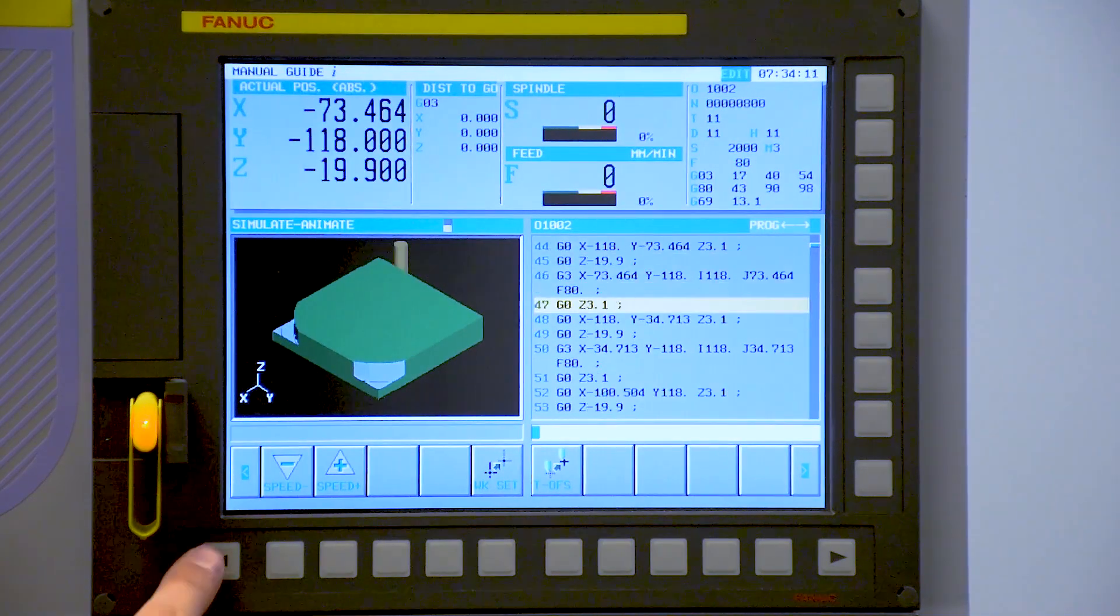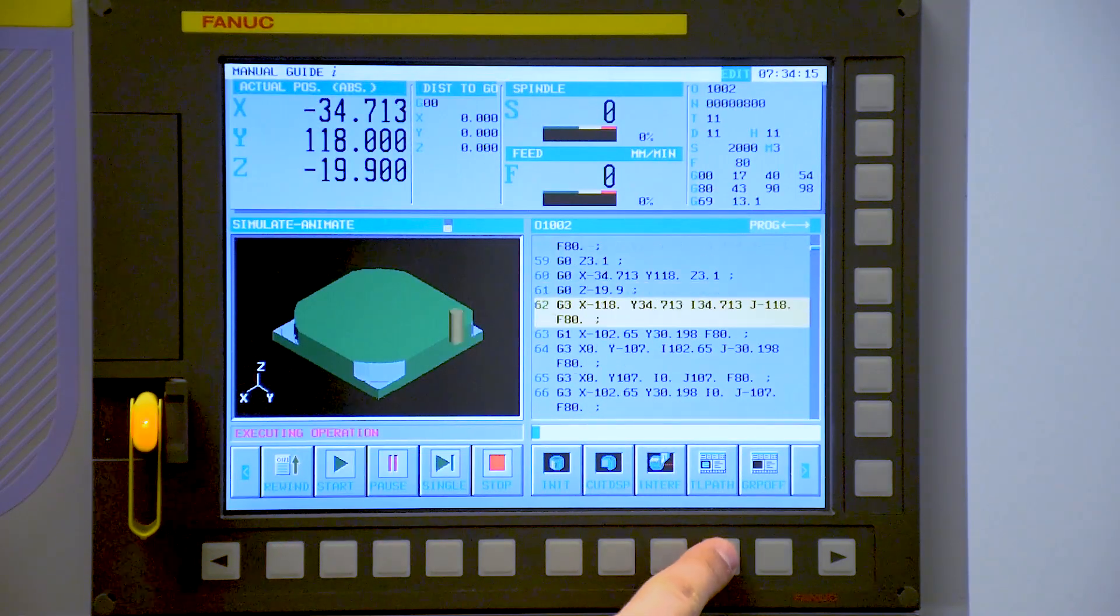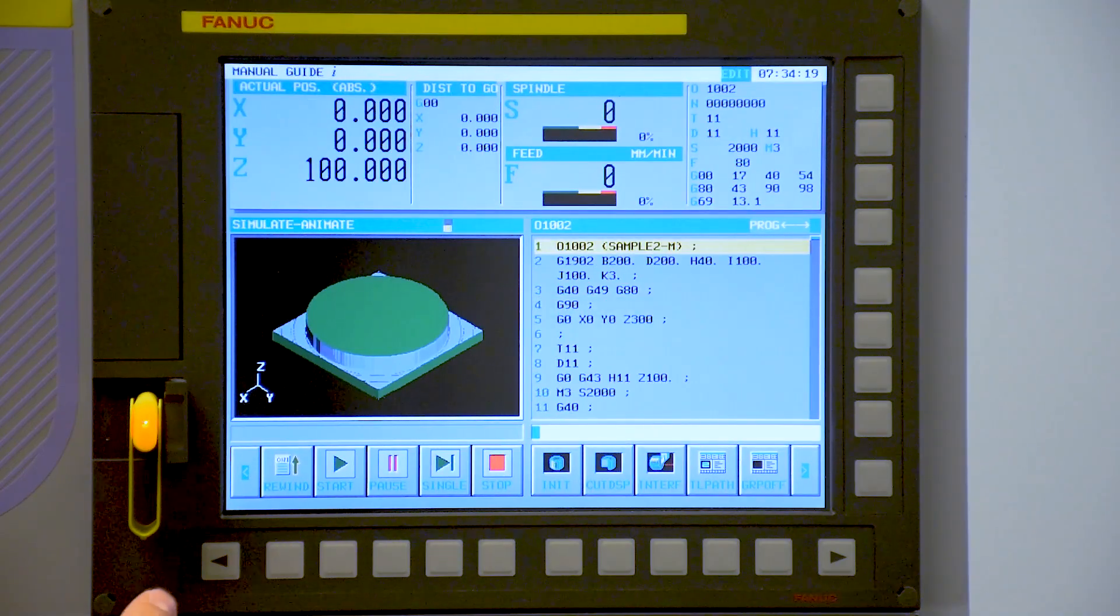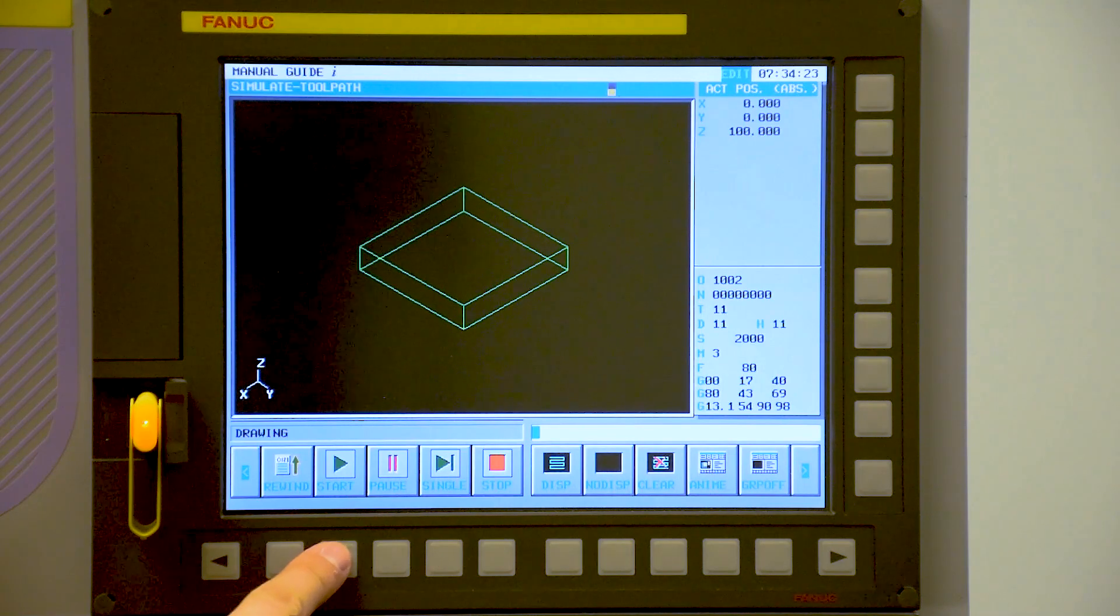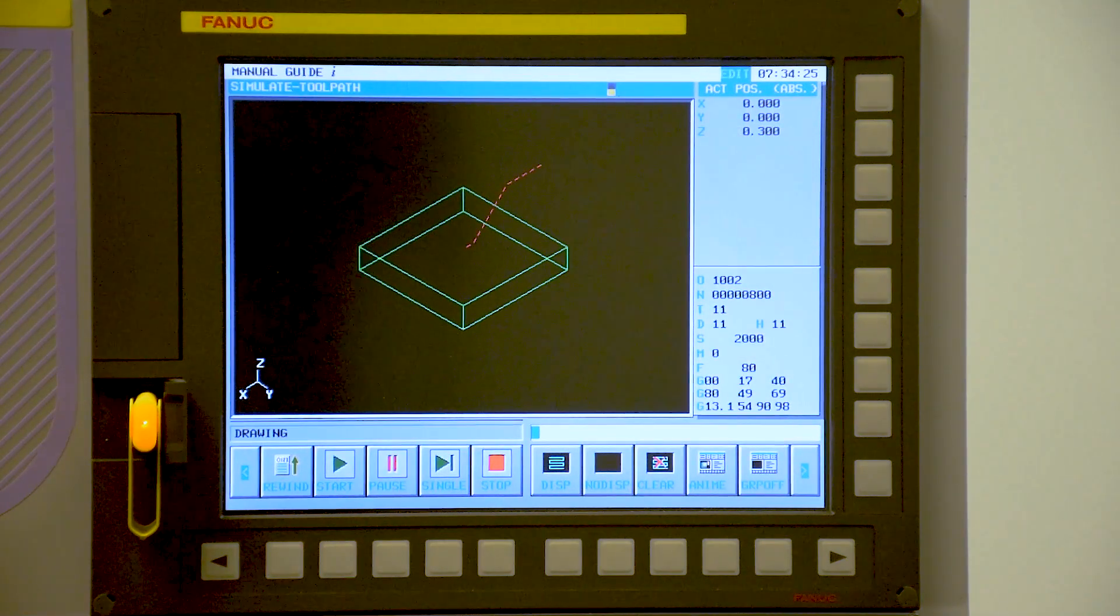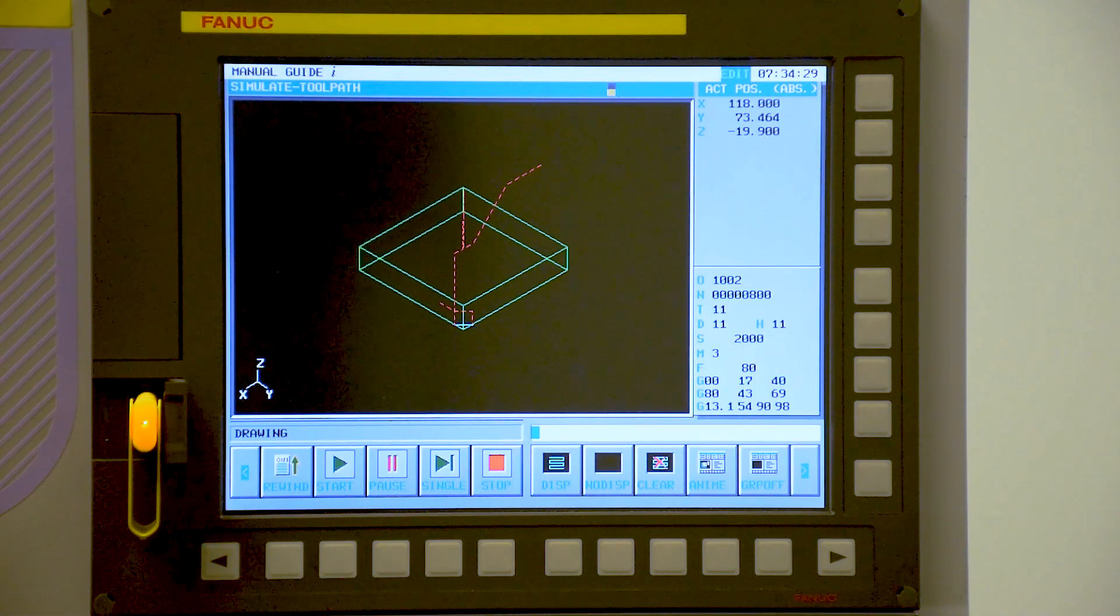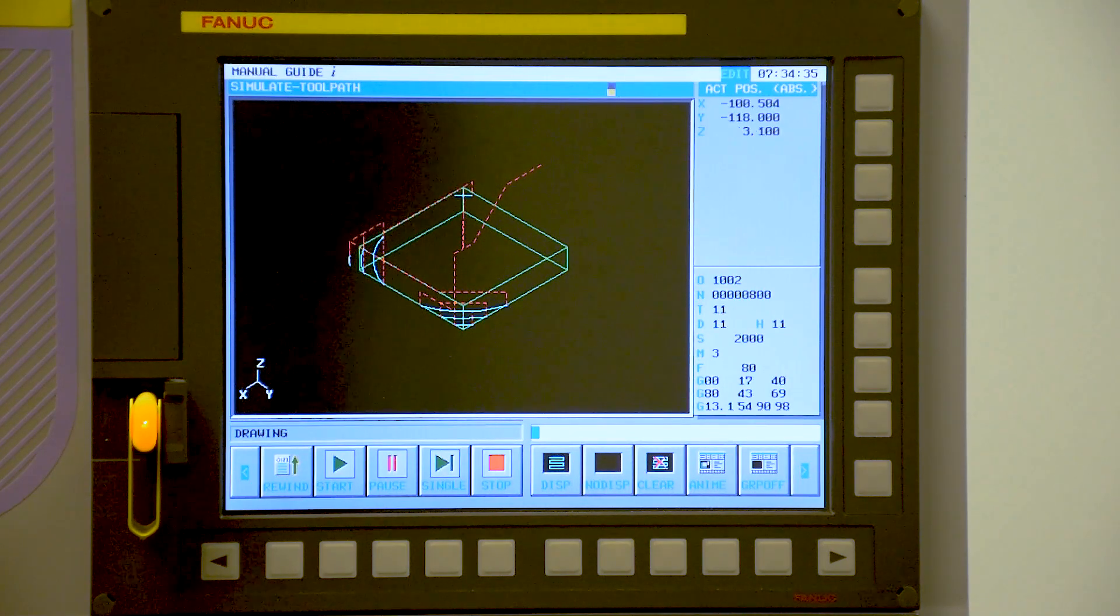Alternatively, instead of 3D solid, we can also look at toolpath. We stop the simulation. Rewind the program. Select toolpath and press play. The red dotted line of rapid moves and then we'll see the actual cutting feed is in a teal color.